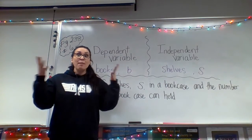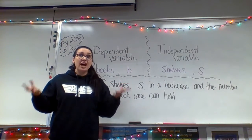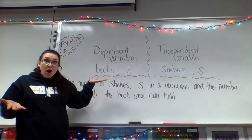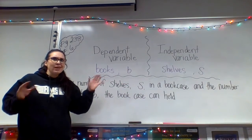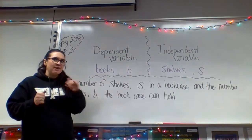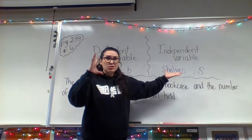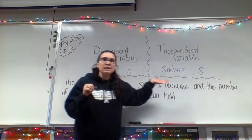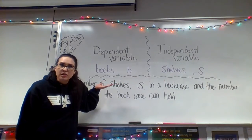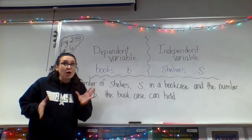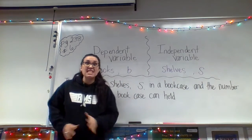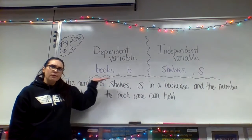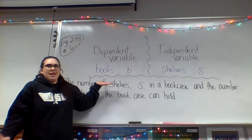Think about it: the bigger my bookcase is and the more shelves it has, the more room for books we'll be able to have. On the flip side, the smaller number of shelves in our bookcase, we're not going to be able to have as many books. So the independent variable is the number of shelves, and the dependent variable is how many books can fit in that bookcase.